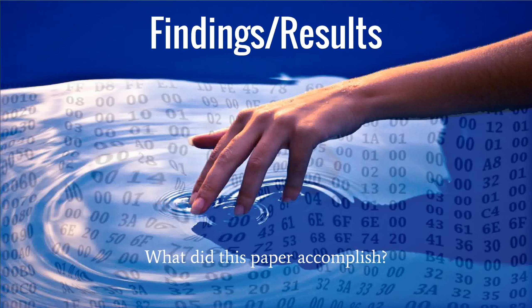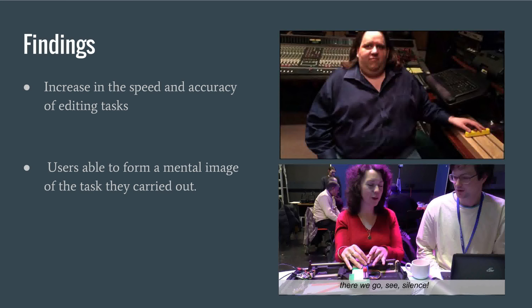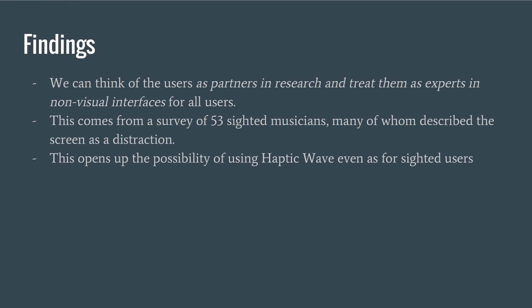So, what were the overall findings from the experiments? The findings were positive, mentioning how the device increases the speed and accuracy of editing tasks and how users were able to form a mental image of their tasks. At the same time, the researchers felt that visually impaired users can be treated as experts in non-visual interfaces. A survey of sighted musicians observed screens as distractions, opening up the possibility of using haptic devices even for sighted users.